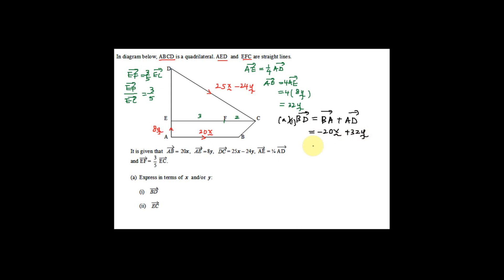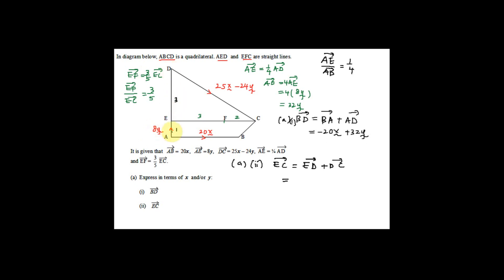Now for Part A part 2, we find EC. EC equals ED plus DC. Since the ratio AE to AD is 1 to 4, the ratio AE:ED:AD is 1:3:4, so ED is 3 times 8y which is 24y. Adding DC which is 25x minus 24y gives EC equal to 25x.